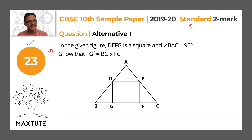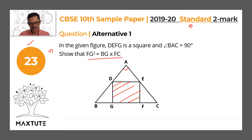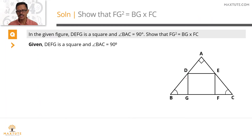In the given figure, DEFG is a square — the shaded portion — and angle BAC is equal to 90 degrees, a right angle. What we need to prove is that FG² = BG × FC. In a square all four sides are equal, so let's assign a variable: let each side measure A units. Therefore DE = EF = FG = GD = A.